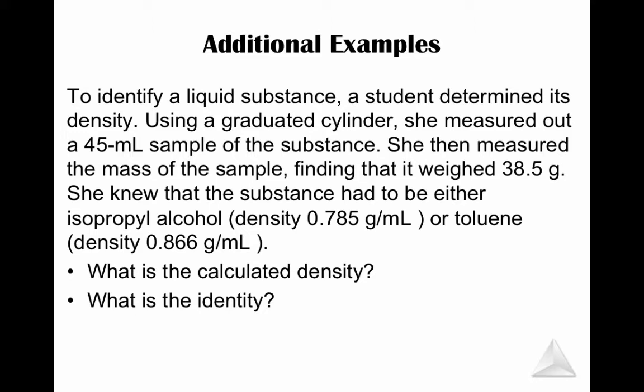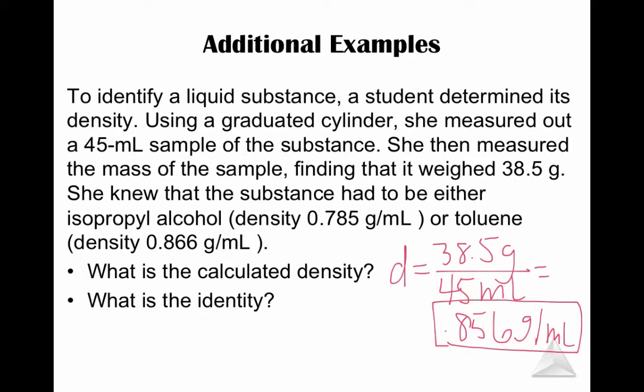So in order to find this answer, we need to start by calculating density. So remember density is mass, which is grams, over volume, 45 milliliters. So when you do 38.5 divided by 45, we find that the density is 0.856 grams per milliliter. So remember, another way to say this is for every 0.856 grams, we have 1 milliliter of substance. So what is the identity? Well, let's compare to the two densities that we were given. The one that's closest would be toluene. That would be our answer.